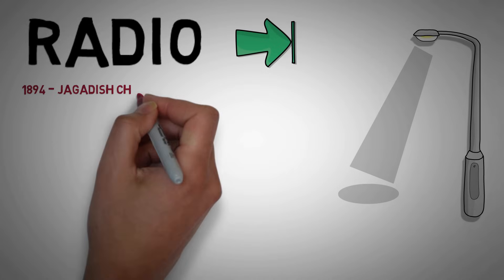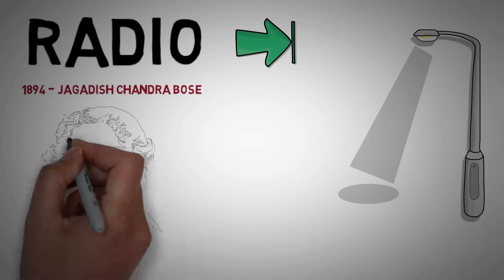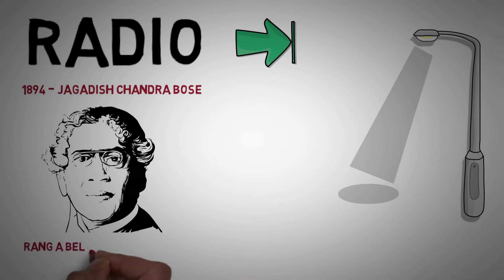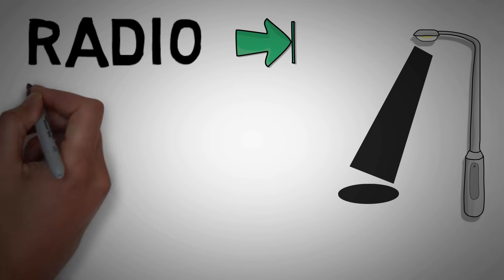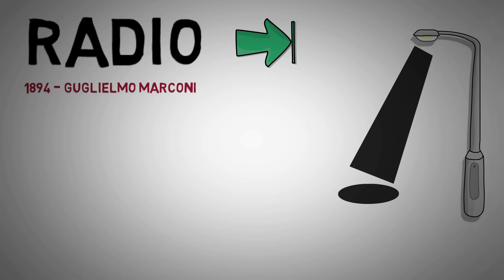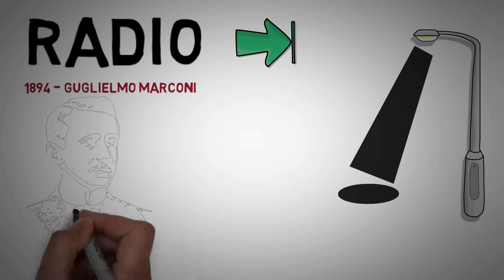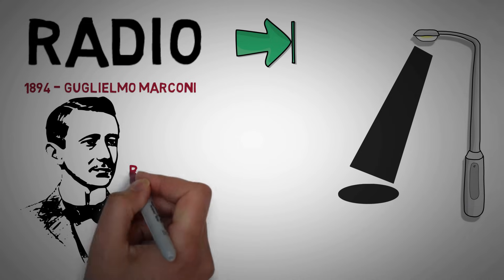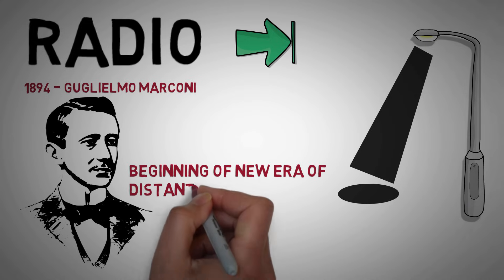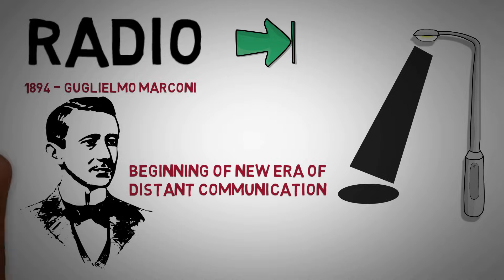In November 1894 Jagadish Chandra Bose at town hall of Kolkata ignited gunpowder and rang a bell kept at a distance using microwave. During the same time an Italian scientist Guglielmo Marconi made an electric bell which went off during lightning. This was just the beginning of a whole new era of distant communication.